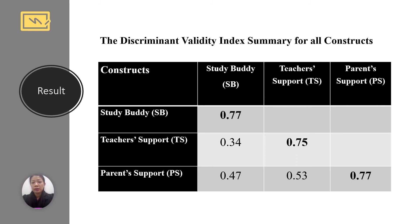For discriminant validity, we can see that the square root AVE value for peers is 0.77, teachers is 0.75, and parent support is 0.77. These bold square root AVE values are larger than the correlation values between constructs, and this means that discriminant validity is achieved.